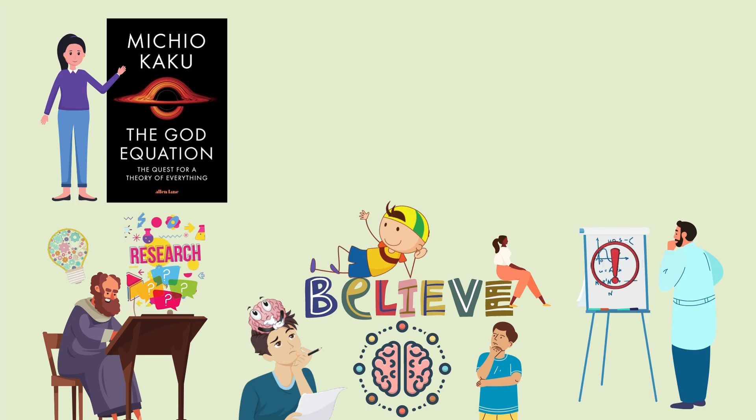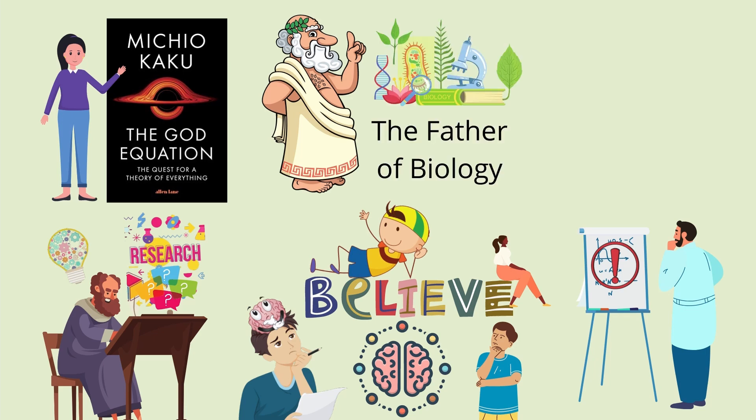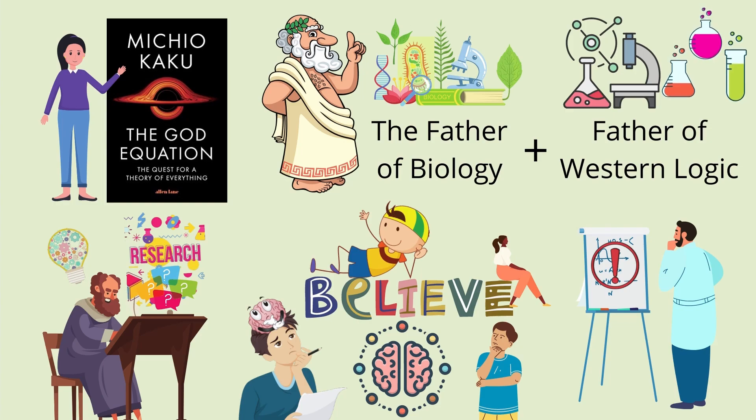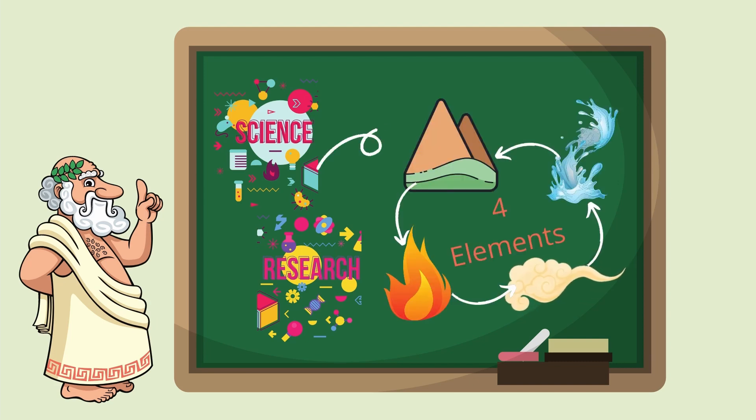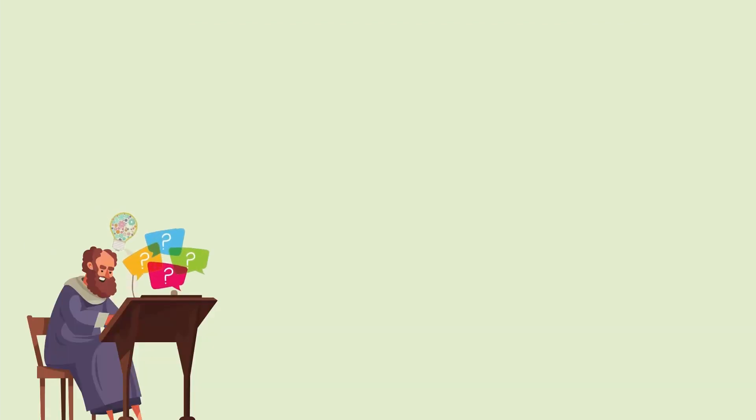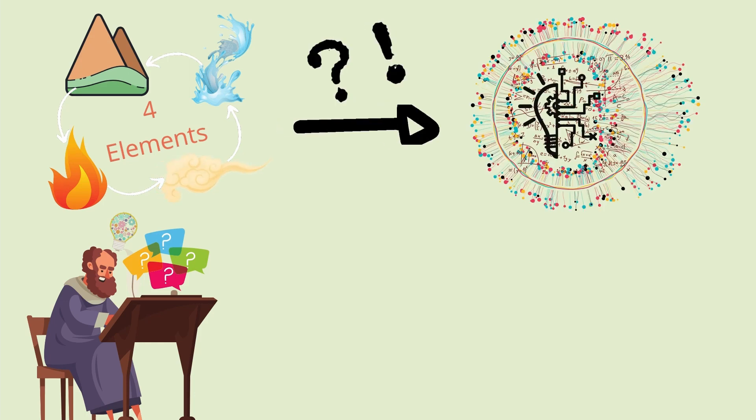Still, there is no solid evidence on this, like the Greek philosopher Aristotle, better known as the father of biology. Aristotle was also called the father of western logic, and he believed that everything could be reduced to a mixture of four fundamental ingredients: earth, air, fire, and water. But Dr. Michio Kaku questions how these four elements could give rise to the world's rich complexity.